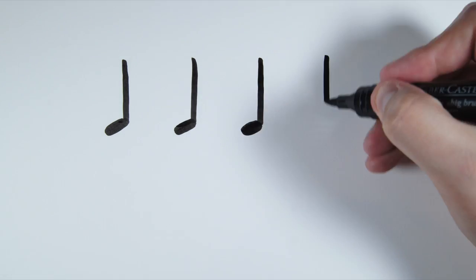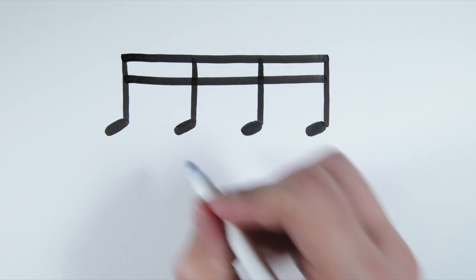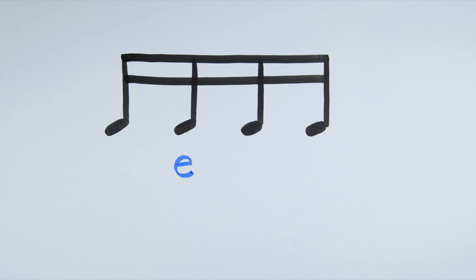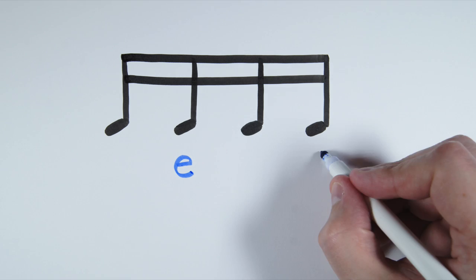In the standard system, the second sixteenth gets the syllable E, written as the letter E. And the fourth sixteenth note gets the syllable U, written as the letter A.